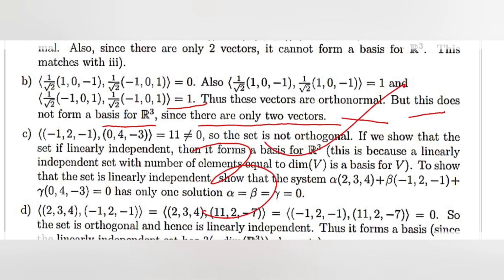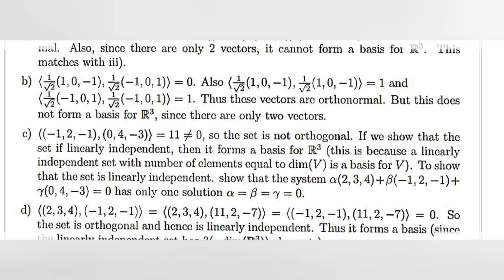Since there are only two vectors in set B, it will not form a basis of R3. Now for set C: the inner product of (-1, 0, -2) and (0, 4, -3) equals 11, which is not equal to 0, so the set is not orthogonal. If we show the set is linearly independent, then it forms a basis of R3, because a linearly independent set with number of elements equal to the dimension is a basis.